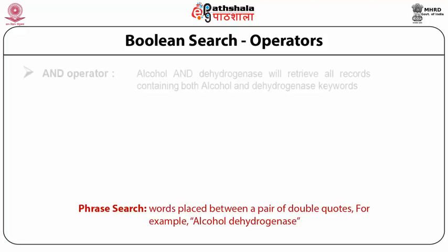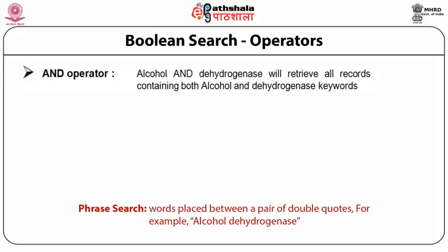The first operator, the AND operator, directs the database to find all those records which contain all search terms combined using the AND operator. This is equivalent to the intersection in a Venn diagram. In some search systems AND is the default operator, and therefore when many search terms are entered in the search text box, all search terms are combined automatically using AND. For example, entering 'alcohol dehydrogenase' in such search systems will be treated as 'alcohol AND dehydrogenase' and will retrieve all records containing both keywords.